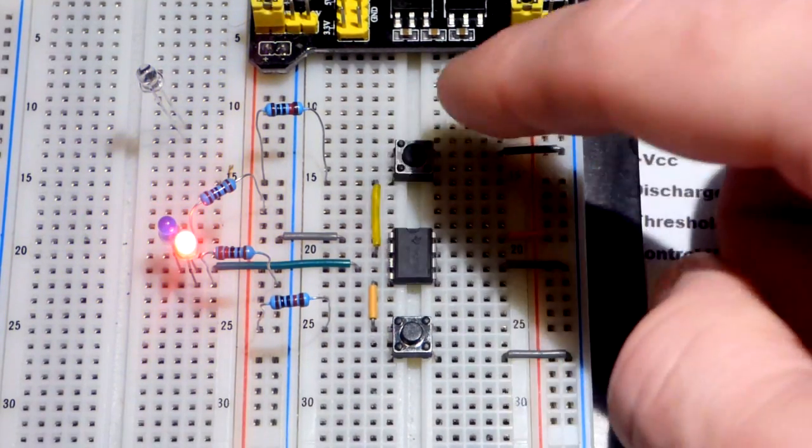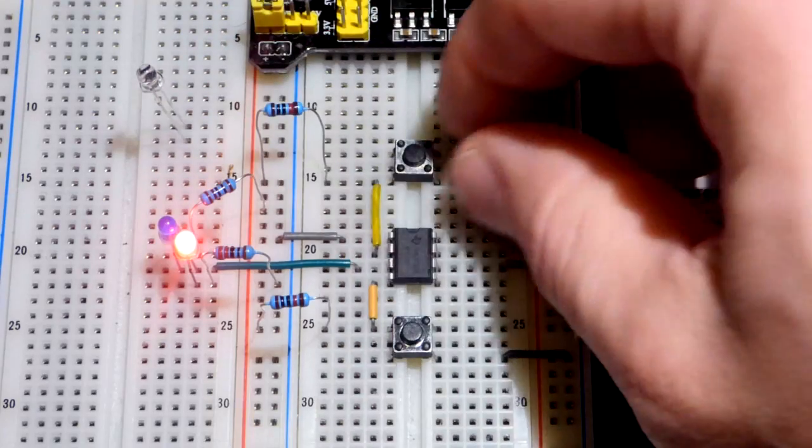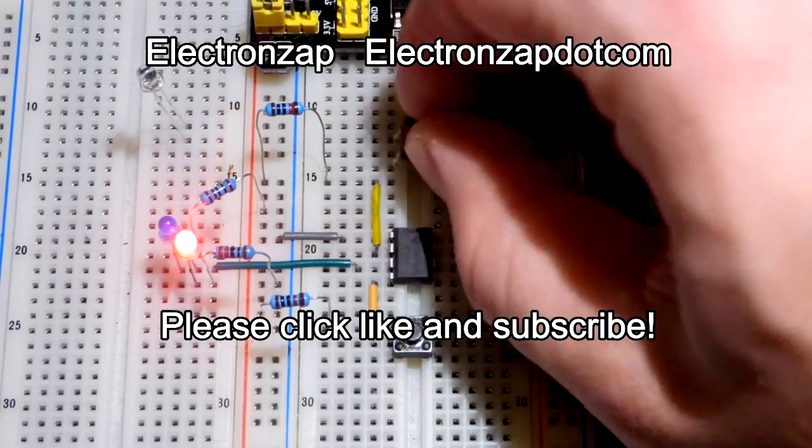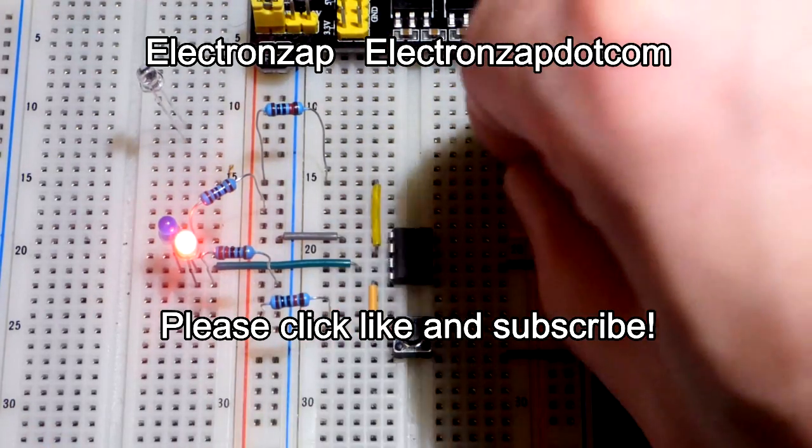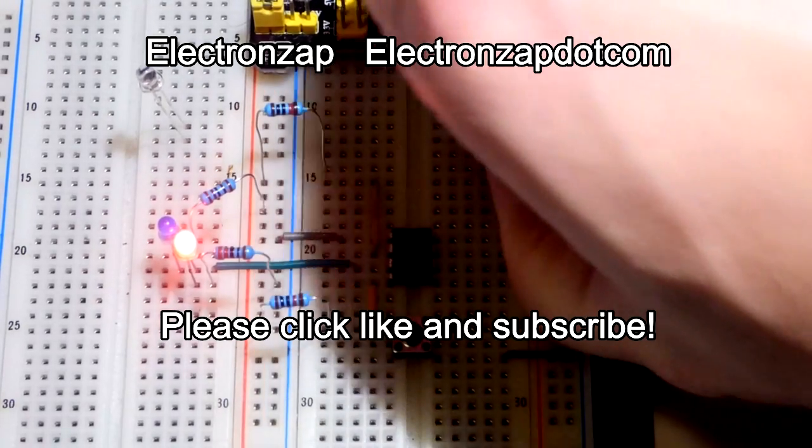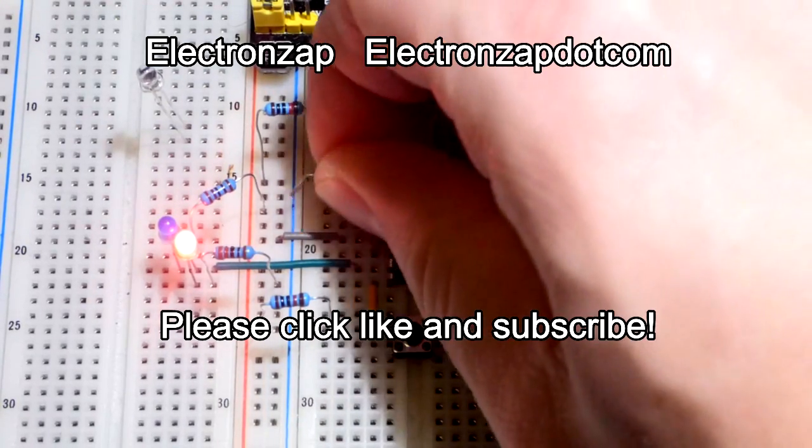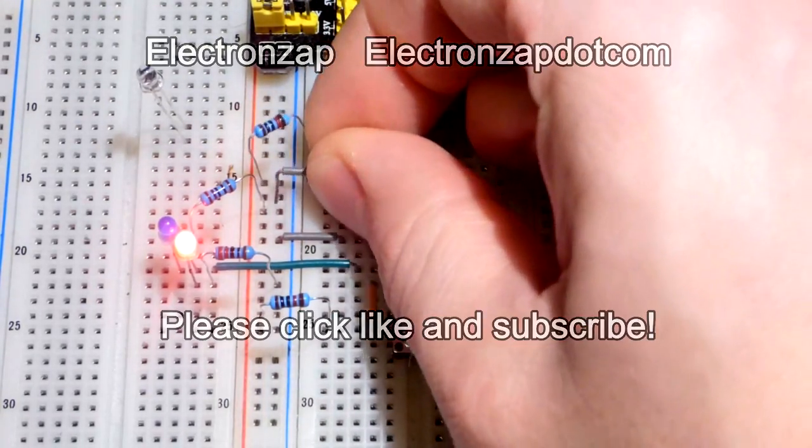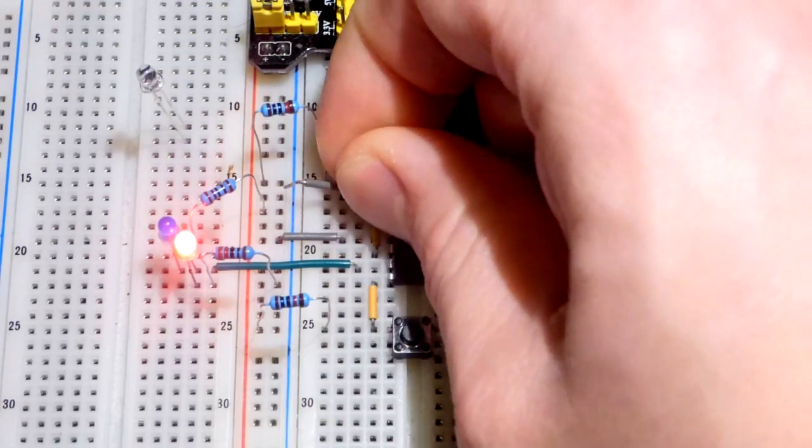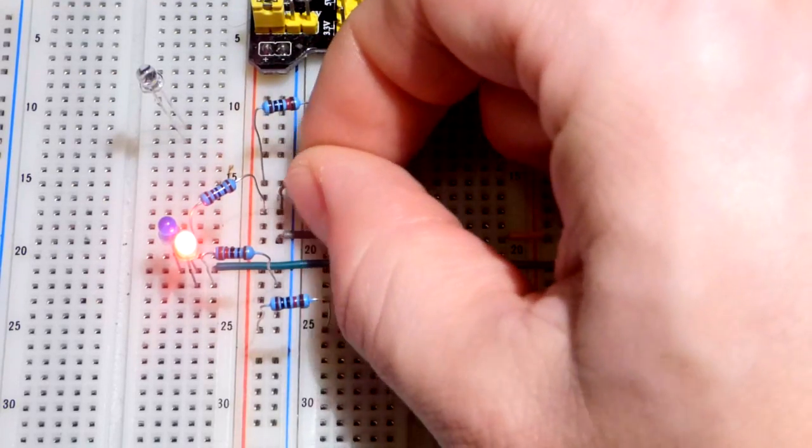So instead of having a switch that goes from infinite resistance to zero resistance, we're going to use a photodiode, which does the same thing based on light. So it's not really a switch, though. It's the amount of current that it lets flow through depends on how much light is falling on it.